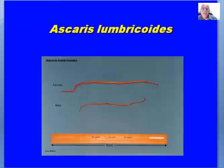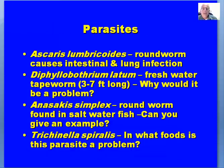Ascaris lumbricoides is an example of a parasitic worm. The female is larger than the male, and it can be up to a foot long with a diameter very similar to angel hair pasta. It causes intestinal and lung infection and can be found in fish. Diphyllobothrium latum is a freshwater tapeworm that can be up to three to seven feet long — think about why this could be a problem, and consider the life cycle of a salmon. Anisakis simplex is a roundworm found in saltwater fish.